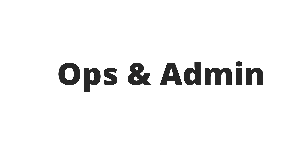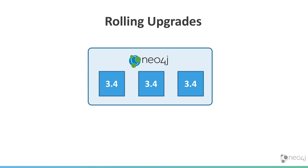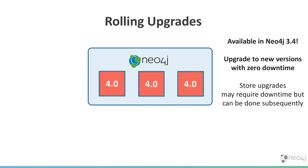We've also made a number of improvements around operations and administration of Neo4j in this release. Perhaps the most important is rolling upgrades. Neo4j powers many mission-critical applications, and something many customers have told us is that they want the ability to upgrade their cluster without any planned downtime. This feature enables just that — if you're moving from Neo4j 3.4 to the next release, you can do it by upgrading each member in the cluster separately in a rolling fashion.